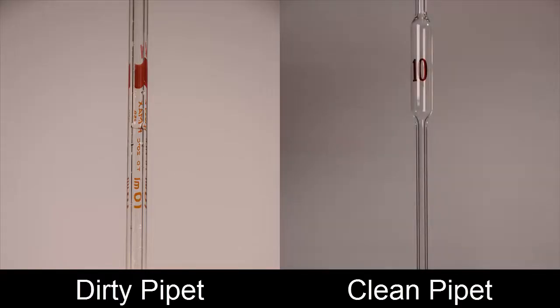Before use, rinse your pipette with distilled water to verify whether it is clean. Cleanliness is indicated by the presence of an unbroken film of distilled water coating the inside of the surface when the pipette is drained. A dirty pipette will have droplets on the inside surface.